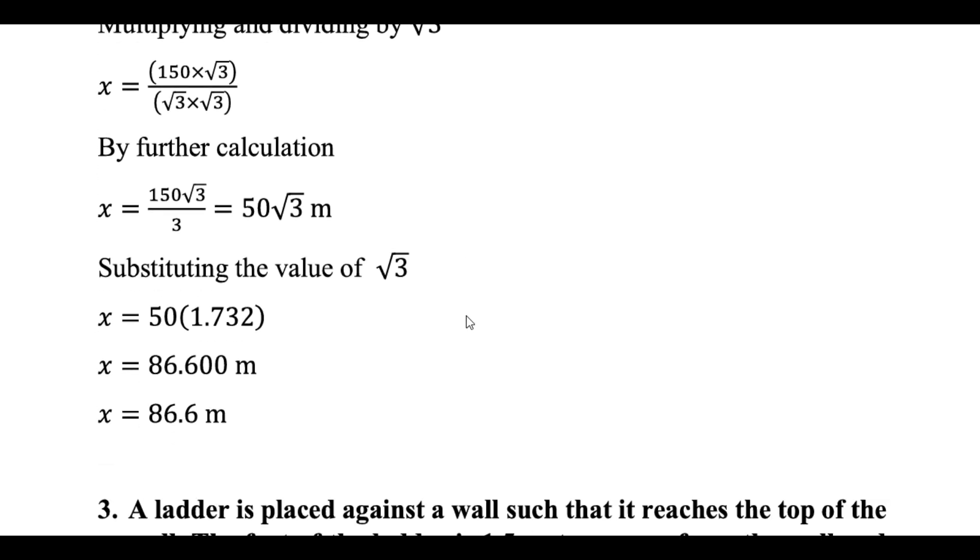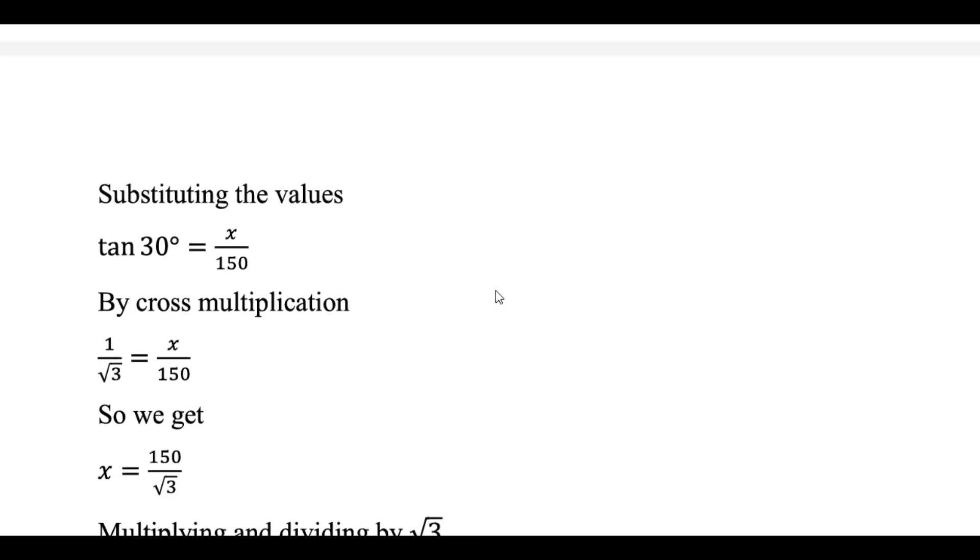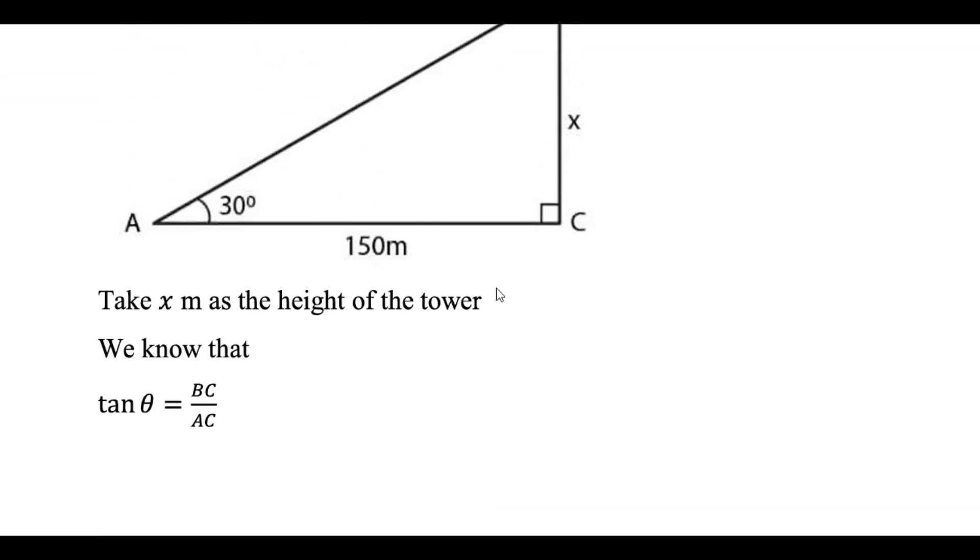Now substitute the value of root 3, that is 1.732. You can multiply with 50, and you will get 86.6 meters. So 86.6 meters is the height, and it is the answer.